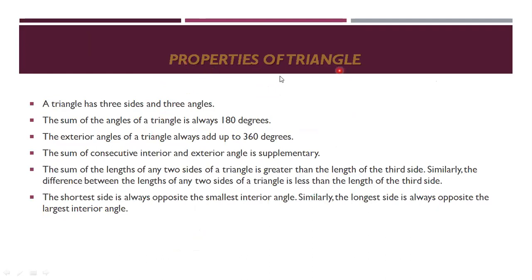Next, properties of a triangle. A triangle has three sides and three angles. The sum of the angles of a triangle is always 180 degrees. The exterior angles of a triangle always add up to 360 degrees. The sum of consecutive interior and exterior angles is supplementary. The sum of the lengths of any two sides is greater than the length of the third side, and the difference is less than the third side. The shortest side is opposite the smallest interior angle, and the longest side is opposite the largest interior angle.